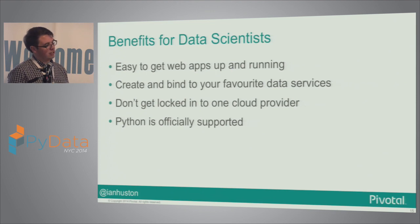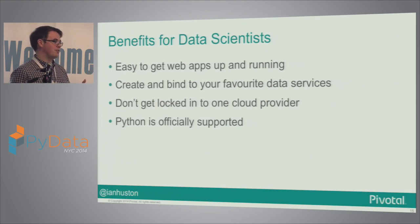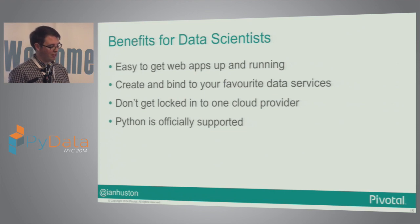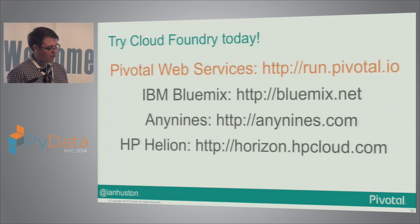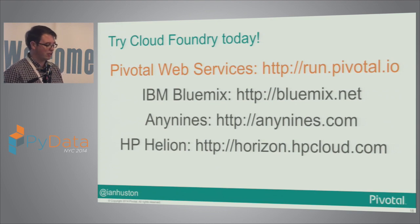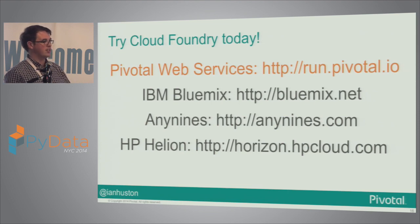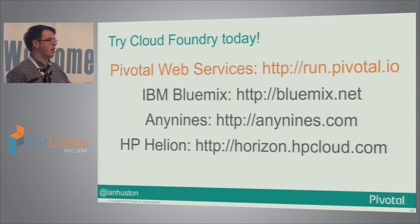When you need to, you can get access to the data services in the back end, and you don't really get locked into a provider — so if Amazon Web Services hikes its prices, everything you've written isn't locked in. If you want to have a go at this, Pivotal runs a service called Pivotal Web Services. There's a free trial at run.pivotal.io — you can push applications and there's quite an interesting pricing model.